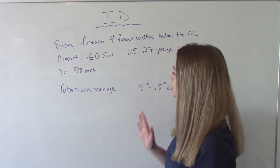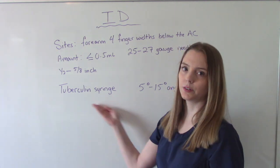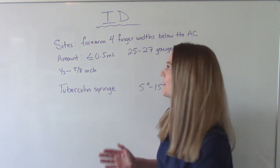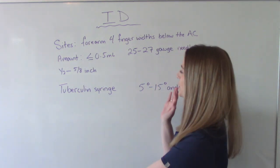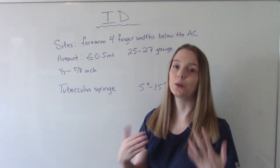And the syringe we use is usually called a tuberculin syringe because nine times out of ten, the reason you're doing an intradermal is because you're doing a tuberculosis test.